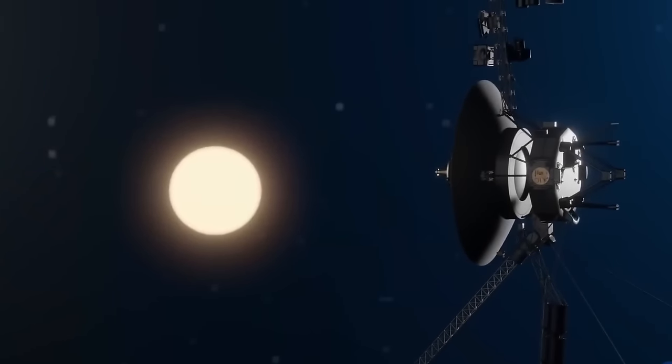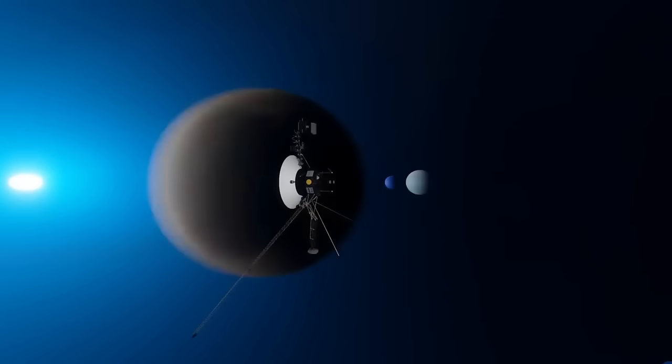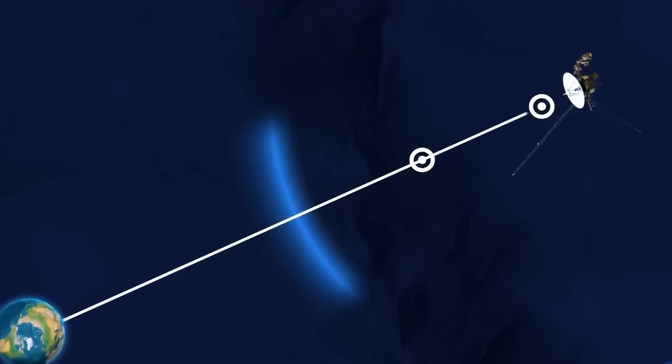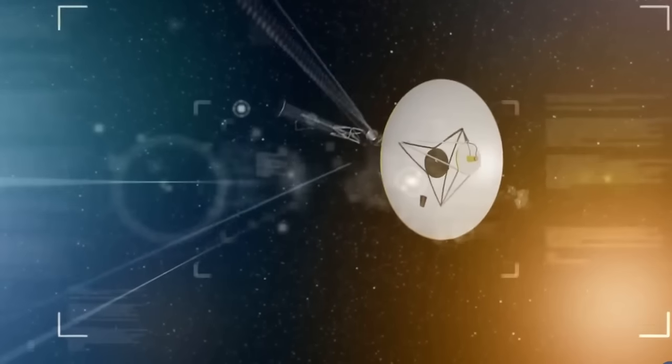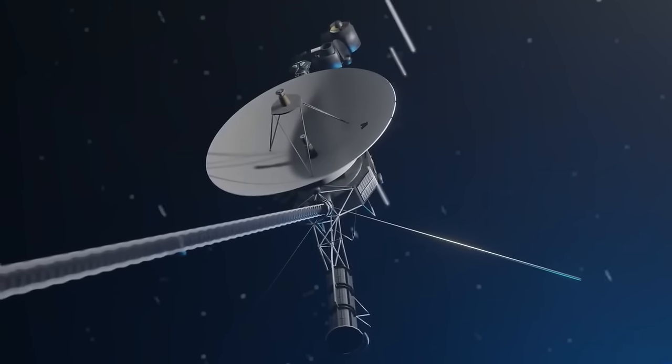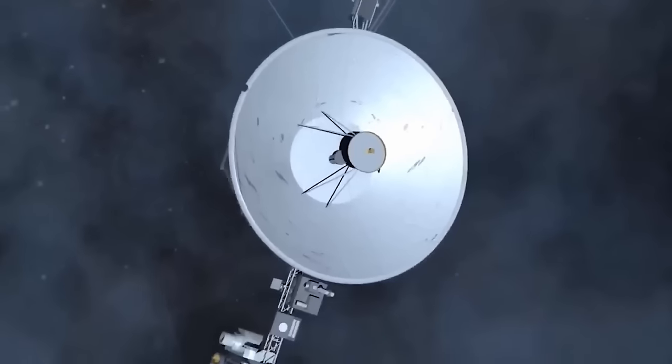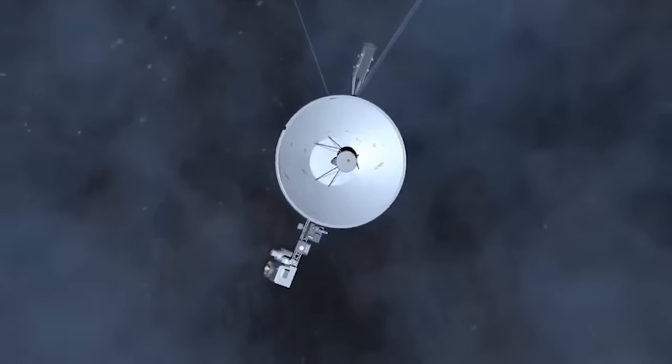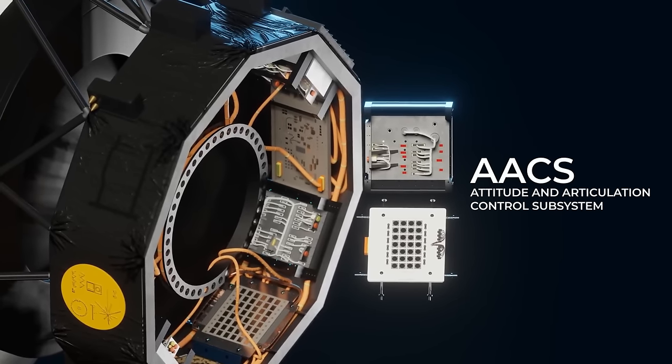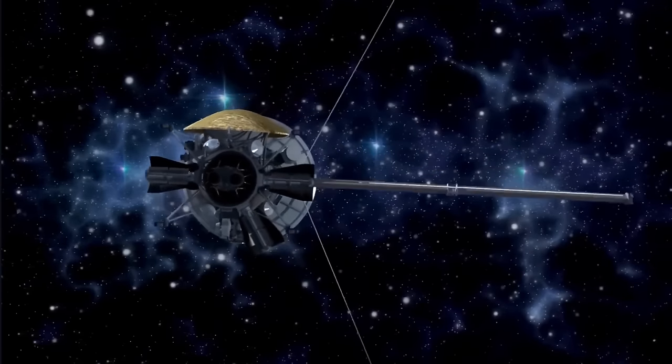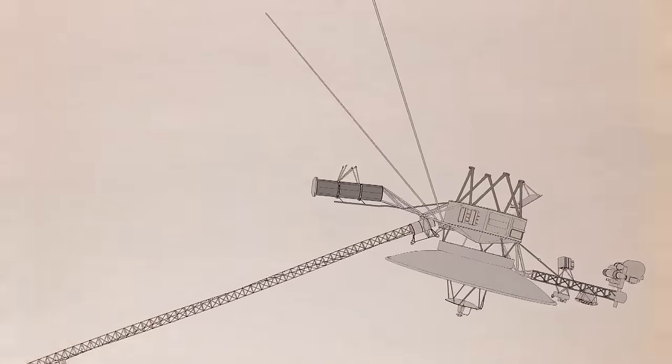Contrary to the doubts of doubters, Voyager 1 has defied expectations and maintained its longevity, largely due to its clever design. Equipped with redundant computer systems, just like its twin, Voyager 2, it boasts two sets of command subsystems, flight data systems FDS, and Altitude and Articulation Control Systems. These redundant systems ensure that Voyager 1 can withstand the rigors of space travel and continue to function effectively even in the face of adversity.